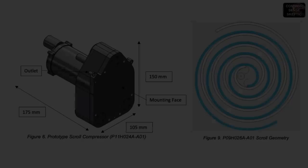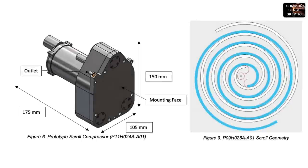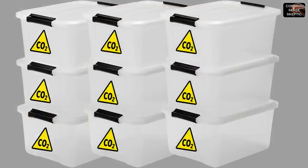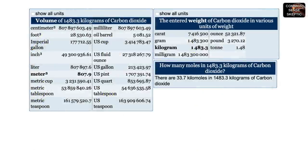Before the break we were discussing possible capture methods for Mars's atmospheric carbon dioxide. Depending on which devices are capable of grabbing onto a six millibar atmosphere, they need to collect 1483.3 kilograms of carbon dioxide daily, which they will then have to somehow store until it can be refined and processed. As calculated on aquacalc.com, 1483.3 kilograms of CO2 is 33.71 kilomoles of the gas.